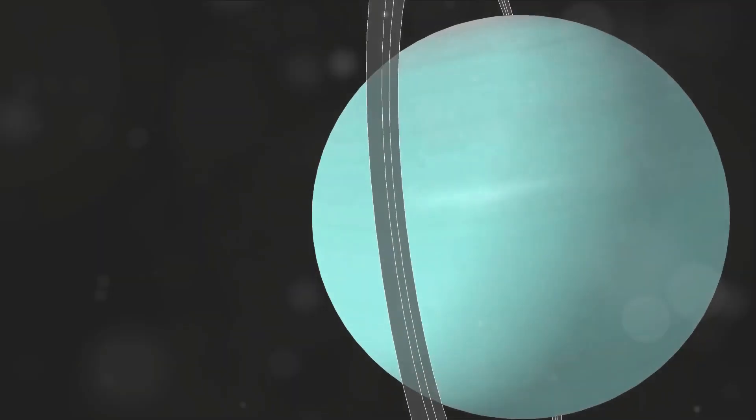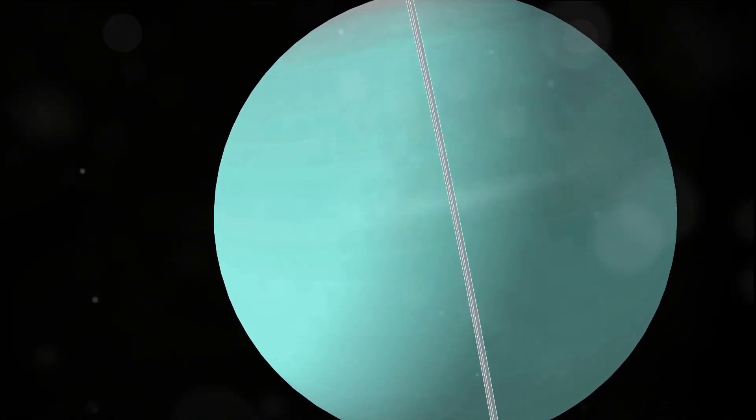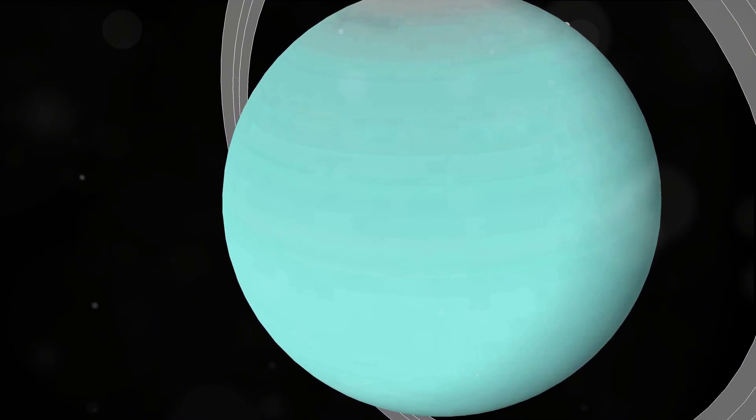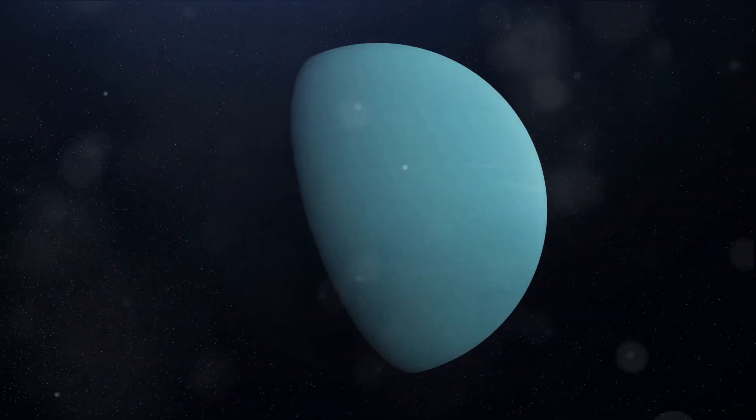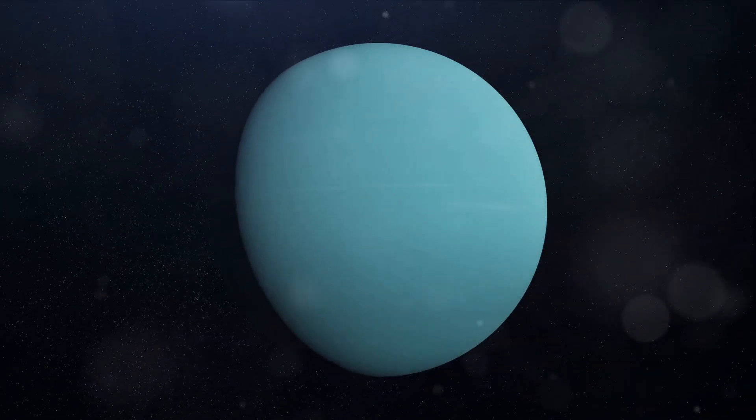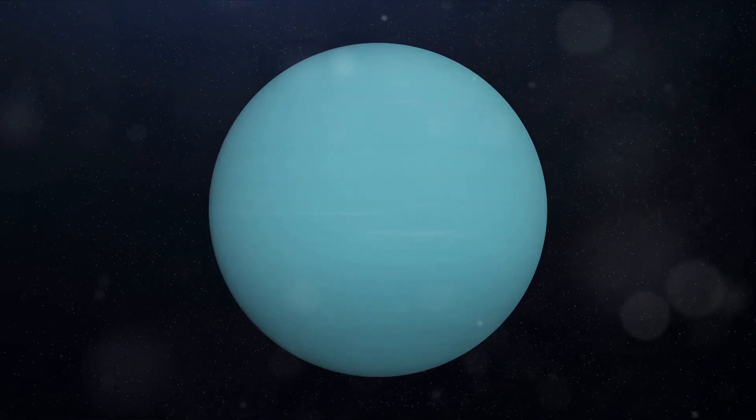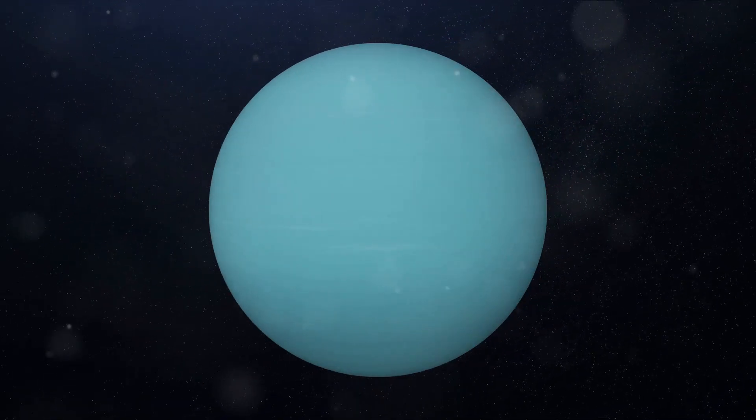Coming up next is Uranus, a pale blue ice giant renowned for its unique sideways rotation. Situated approximately 1.784 billion miles away from the warming rays of the sun, Uranus boasts a ring system and is orbited by 27 known moons. One particularly fascinating feature of Uranus is its extreme tilt of about 98 degrees on its axis.